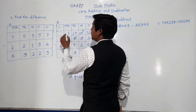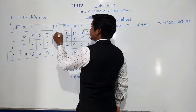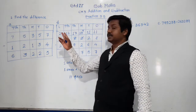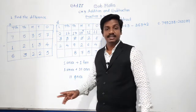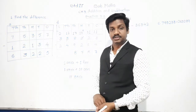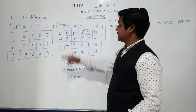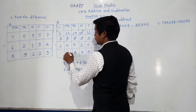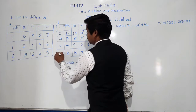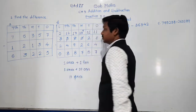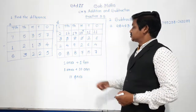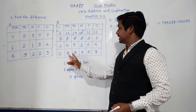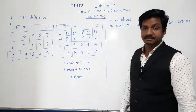From three lakh, one lakh is borrowed, leaving two lakh. One lakh equals ten ten-thousands, so total becomes twelve ten-thousands. Twelve minus four is eight, and two minus two is zero. So the difference between these two numbers is 88,757. This is how we do subtraction — simple subtraction and subtraction with borrowing. Examples B and C you have to solve as homework.